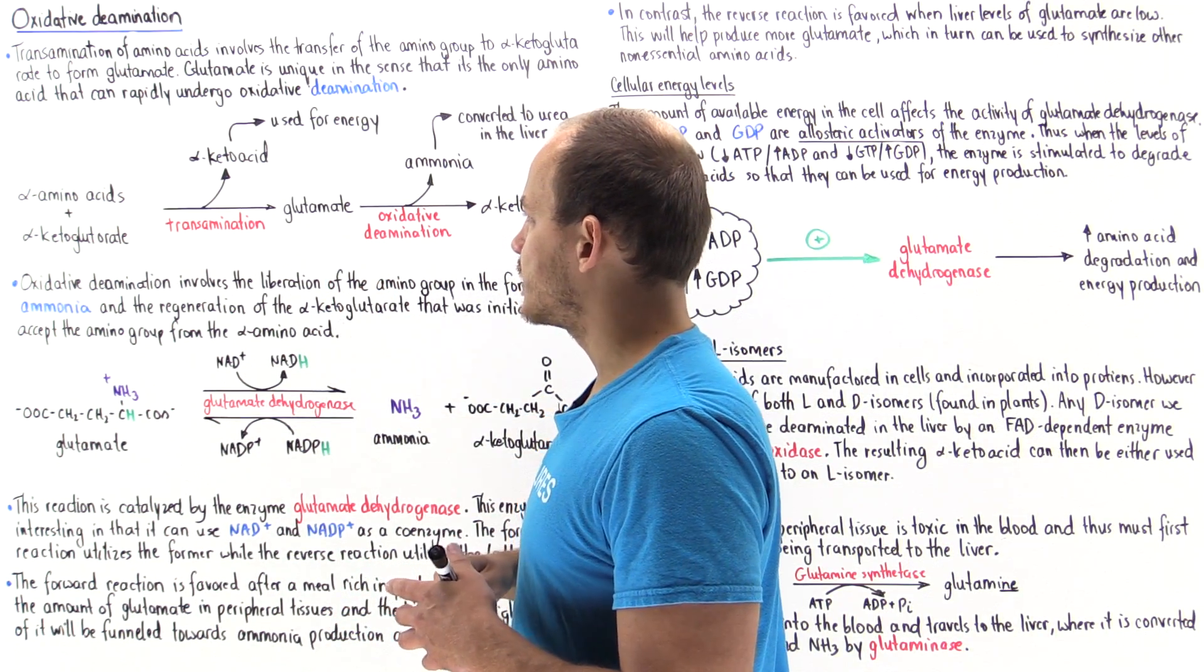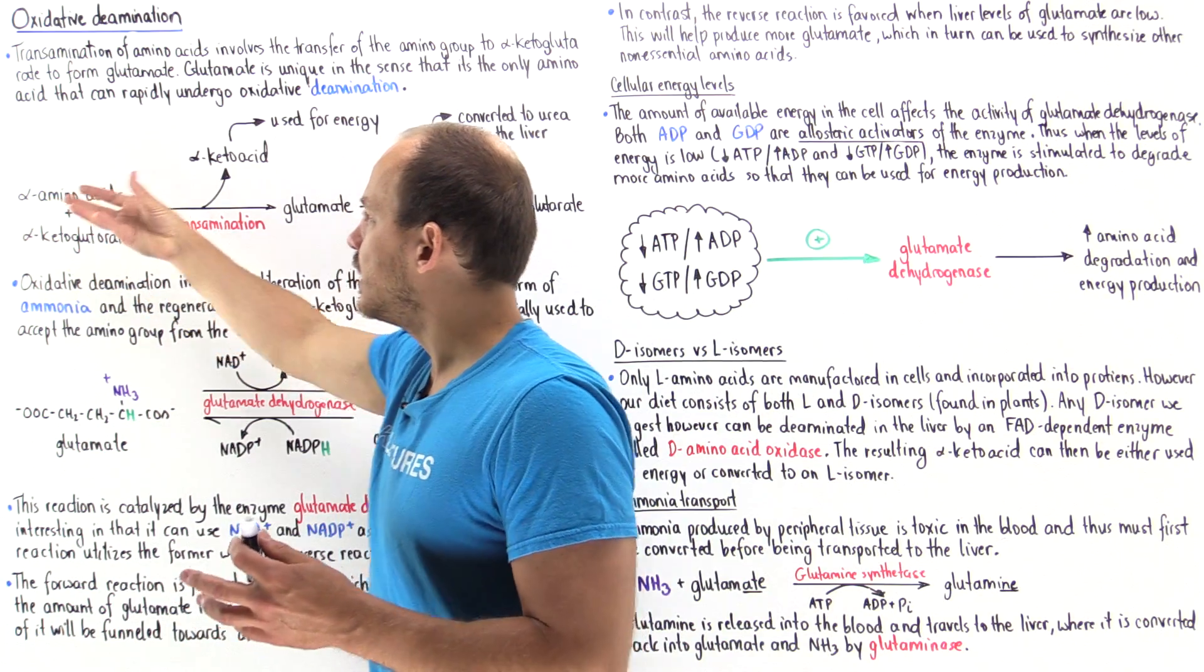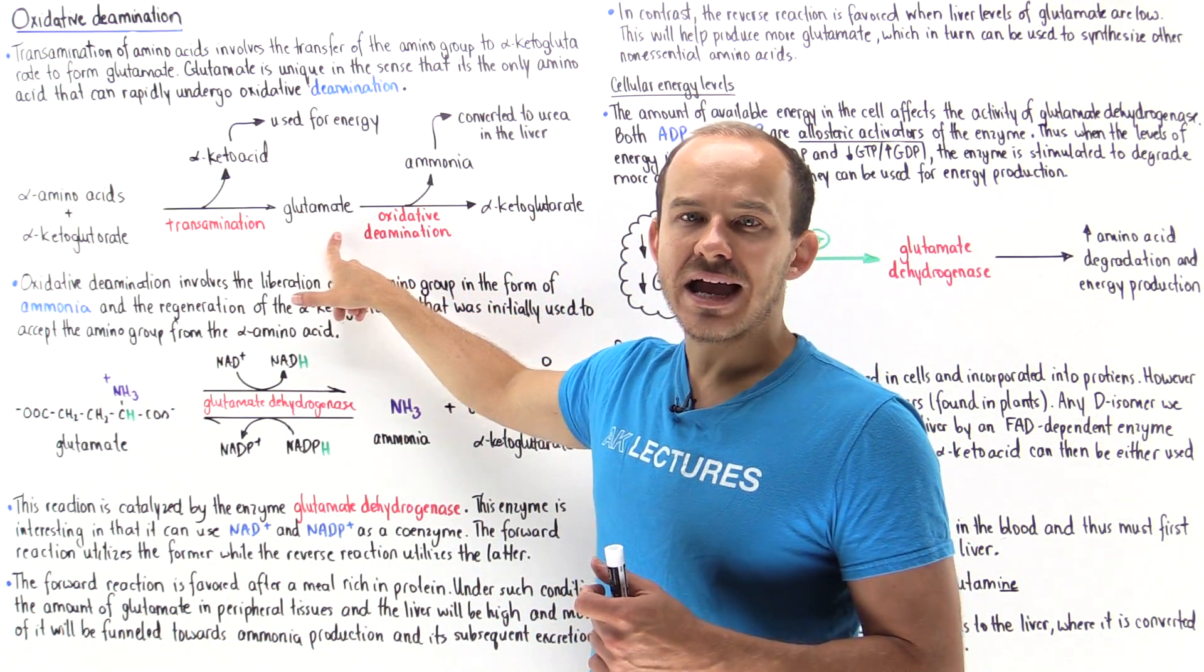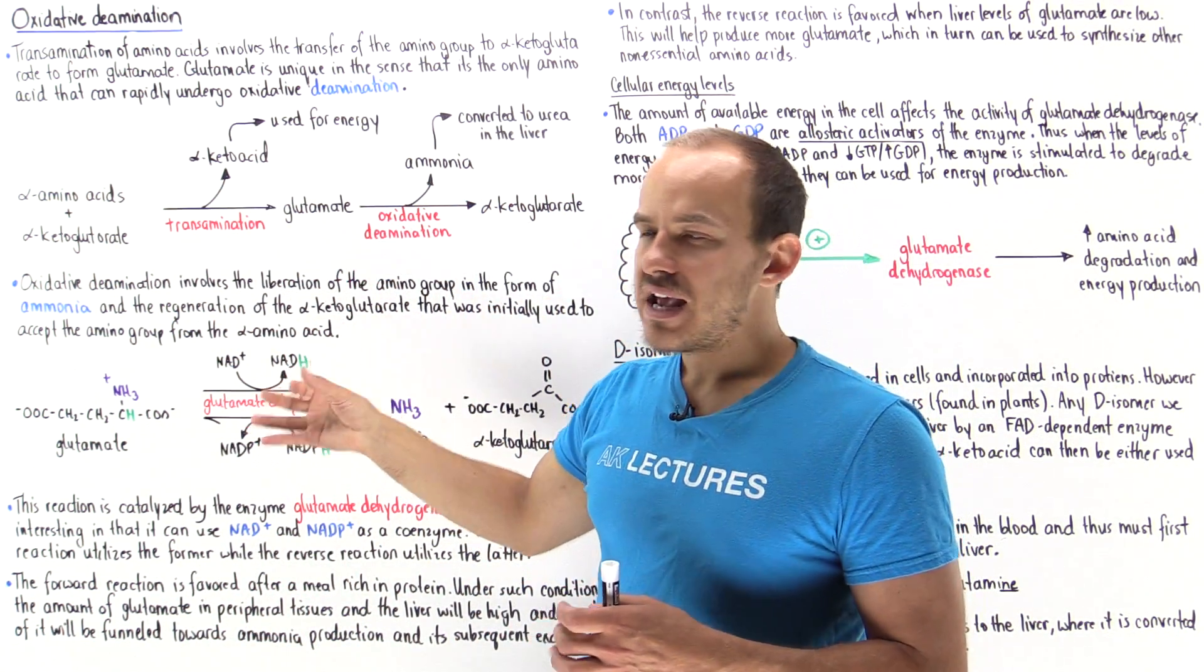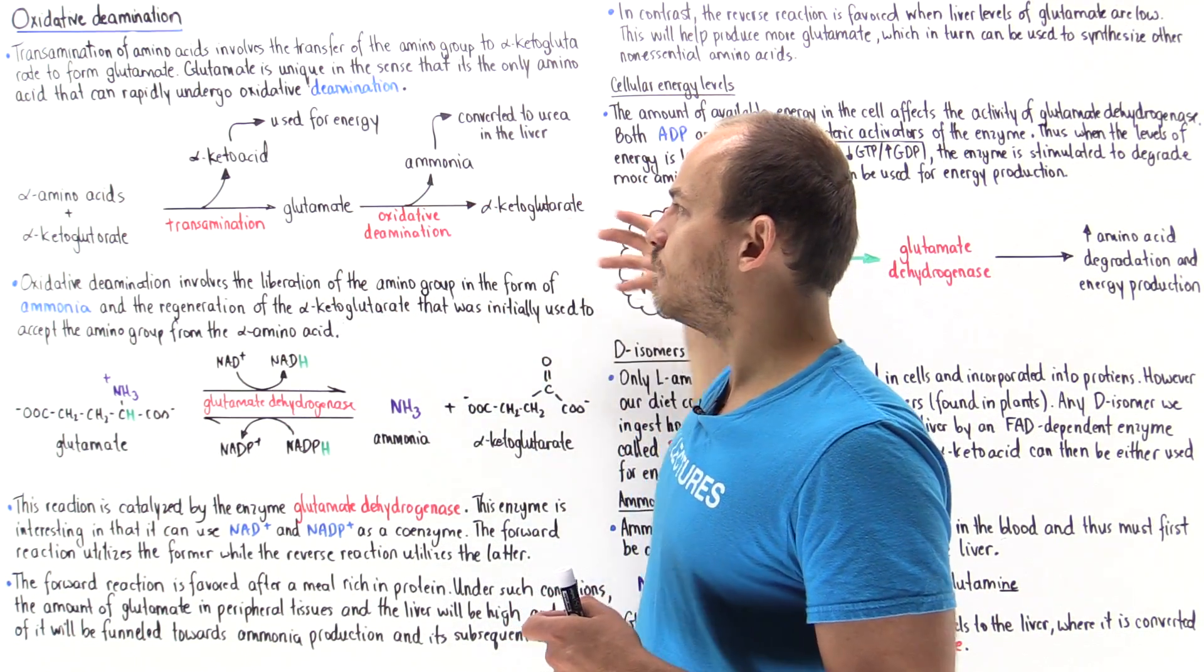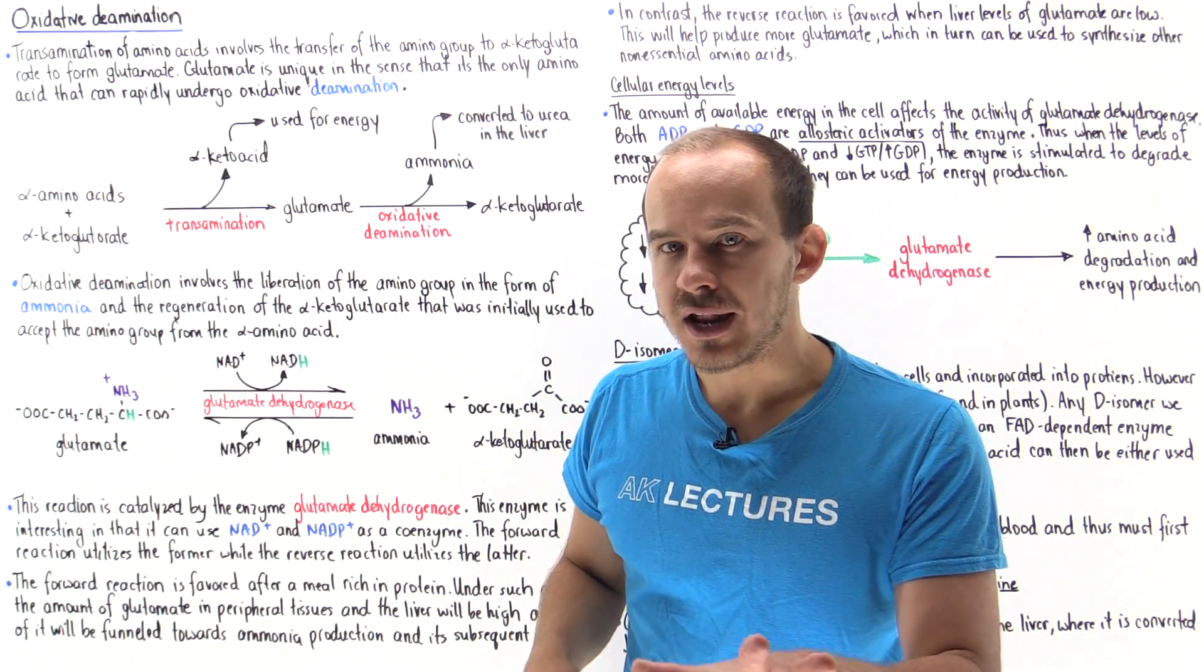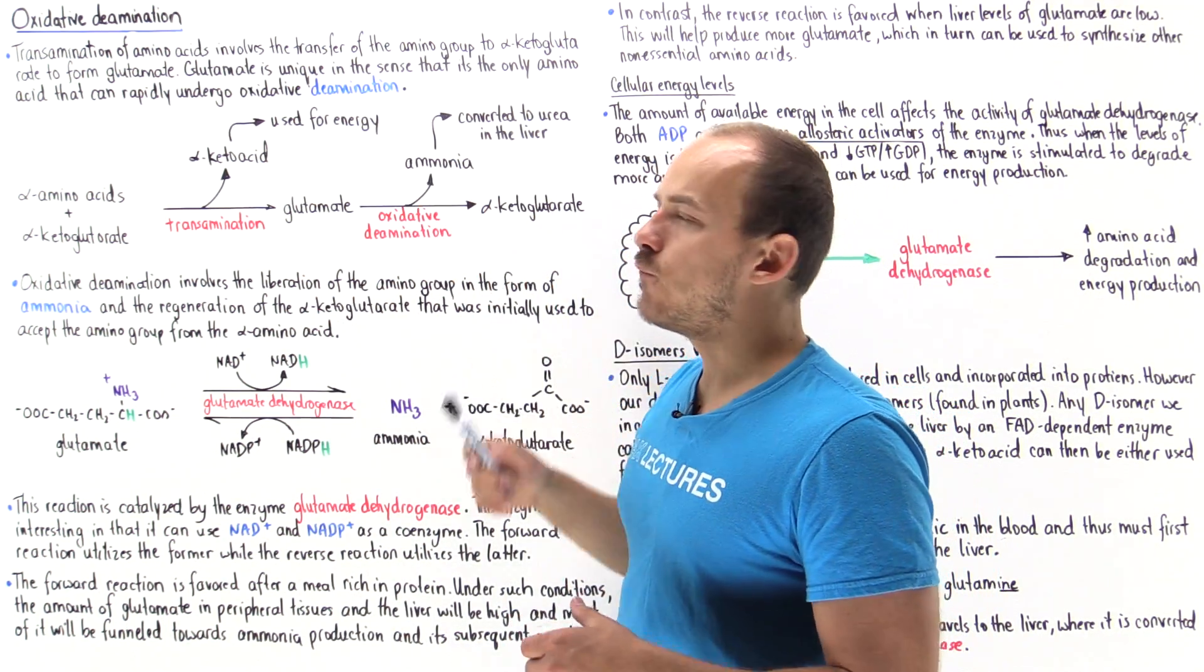But why the glutamate? Why is it that all the alpha amino acids have to be converted to this single amino acid and why is it glutamate? The answer is simple. Because our cells have a way of quickly converting glutamate back into alpha-ketoglutarate and liberating the nitrogen group in the form of ammonia.